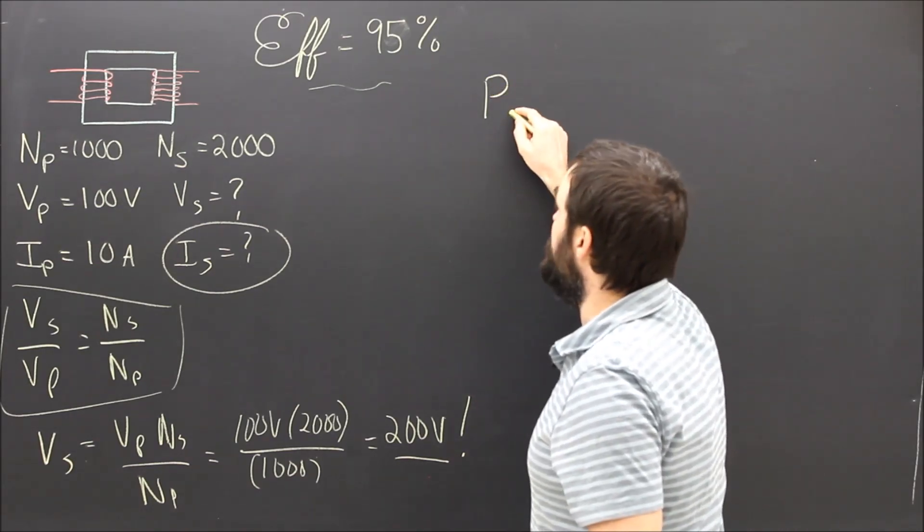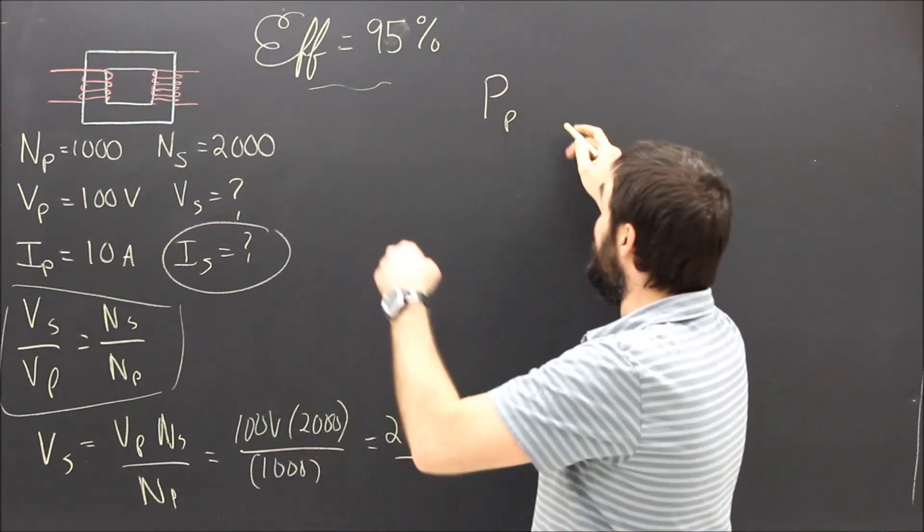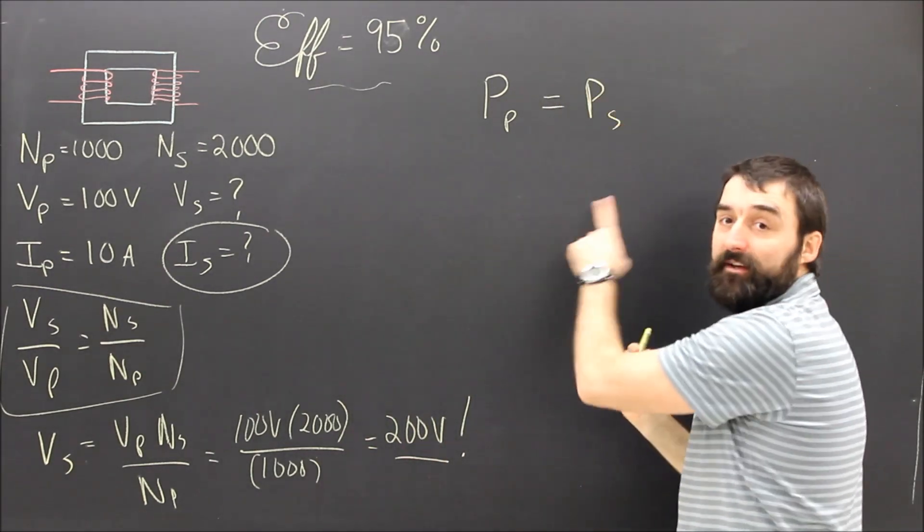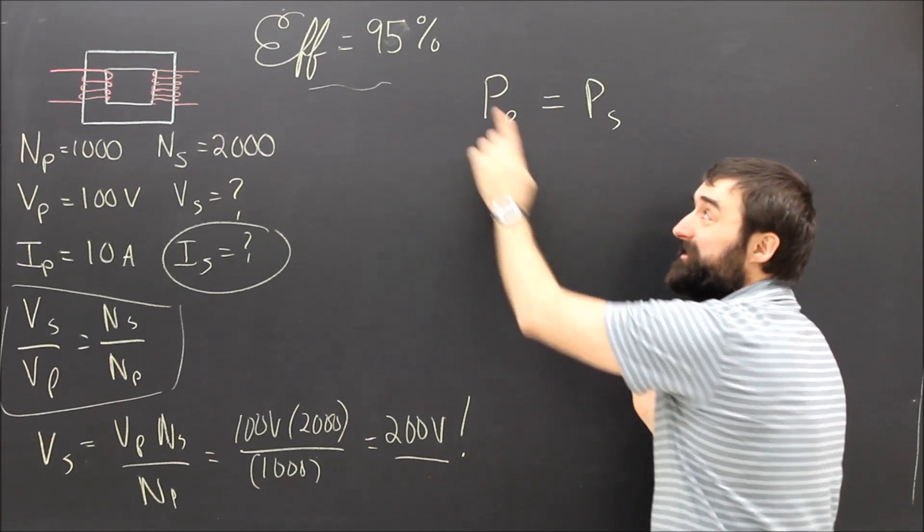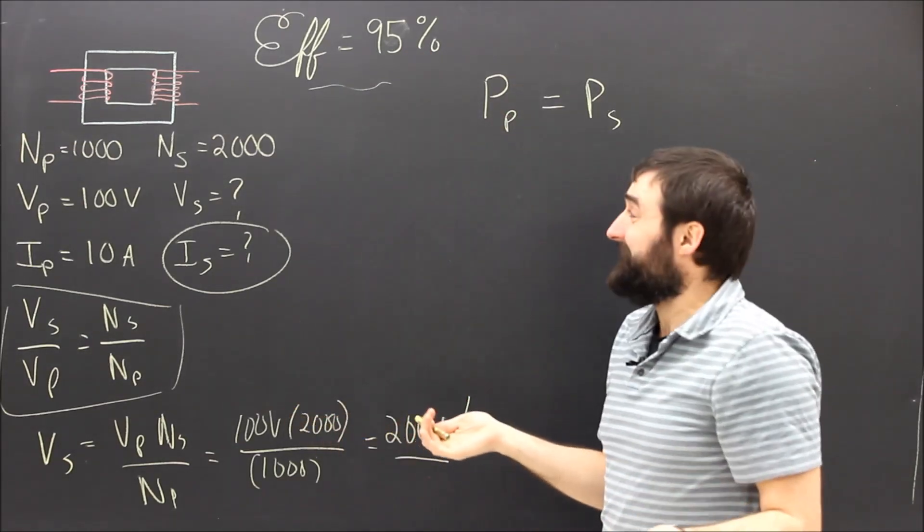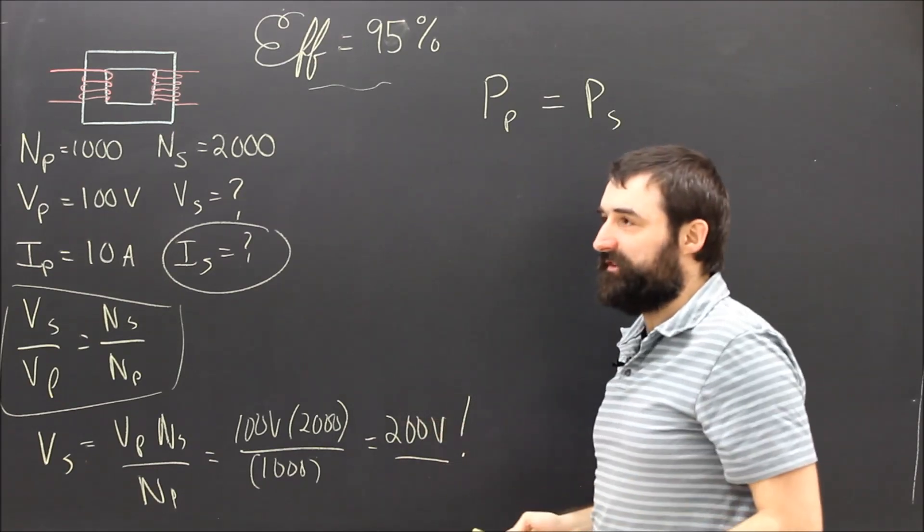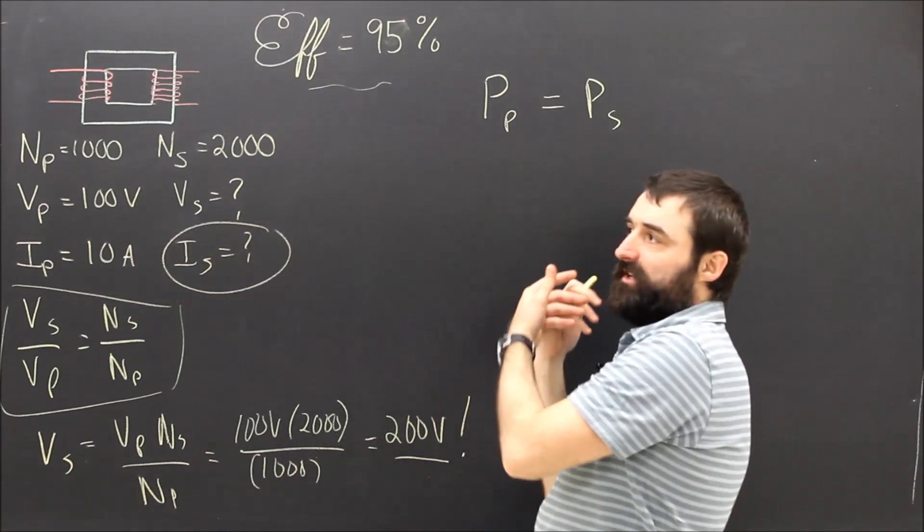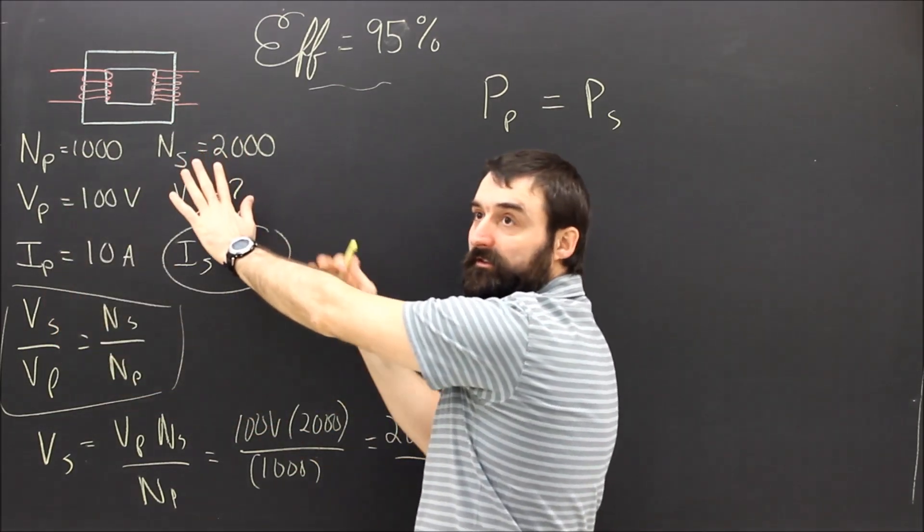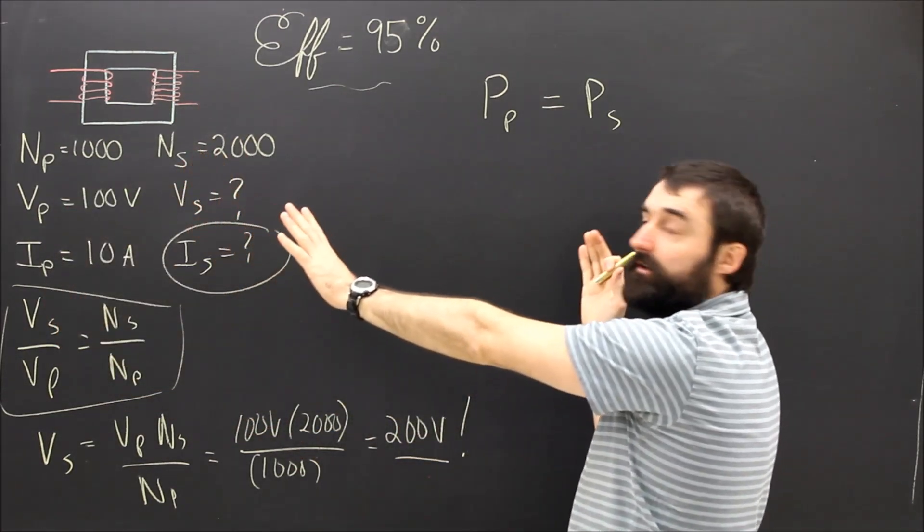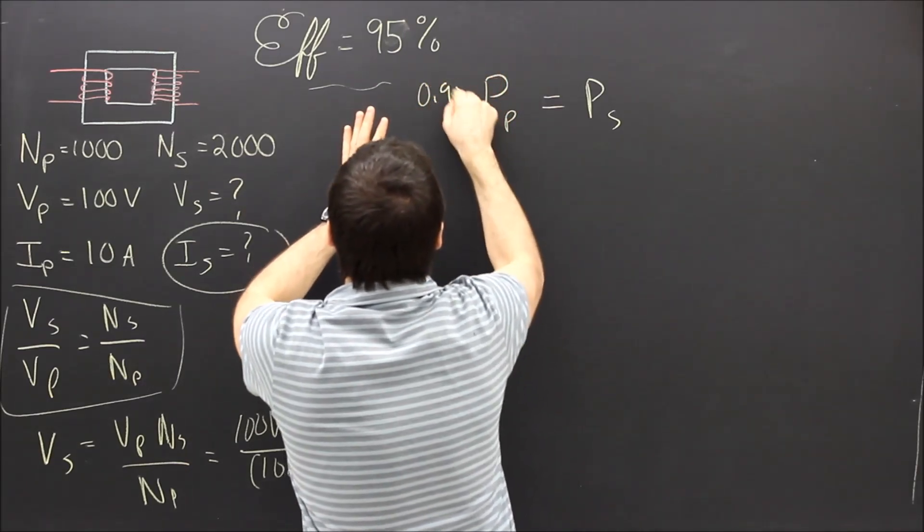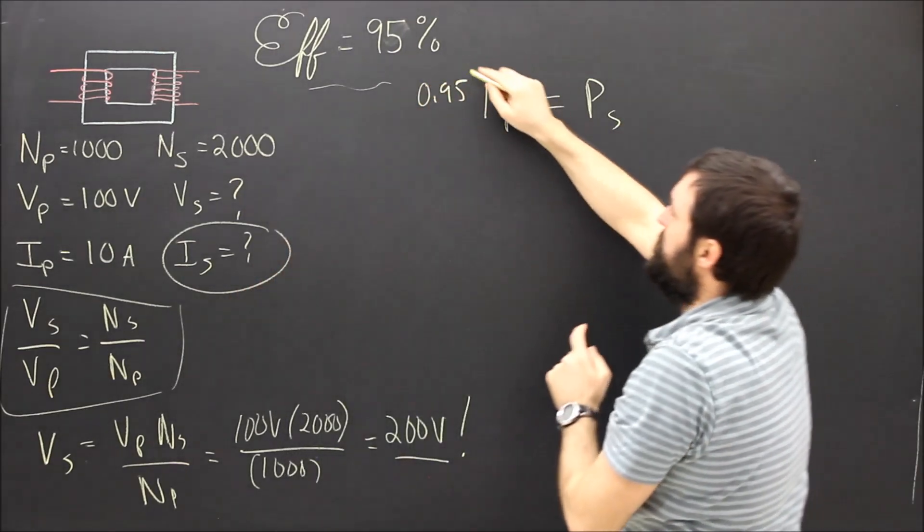If it was 100% efficient, then the power going into the primary would be equal to the power going out of the secondary. That's true if it's 100% efficient, but not anymore. So what do we do? How do we calculate it? If it's only 95% efficient, that means 95% of what goes in comes out. So if we put in 1,000 watts, only 950 are going to come out. So the power that goes in times 0.95 equals the power that goes out.